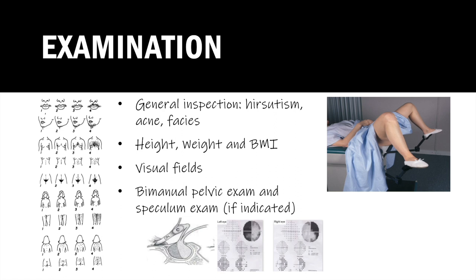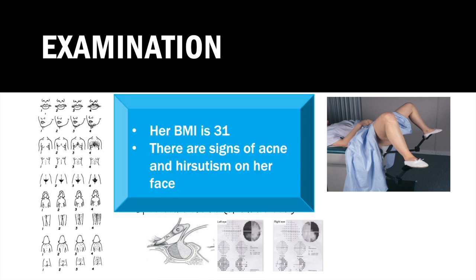The GP asks you to perform a relevant examination. You remember to inspect for hirsutism and acne as signs of hyperandrogenism, and to look for distinctive facial appearances such as exophthalmos in Graves' thyrotoxicosis or a cushingoid moon face. You ask Amy for her height and weight to calculate her BMI. The GP prompts you to examine her visual fields as a quick screen for pituitary adenoma causing optic chiasm compression and bitemporal hemianopia. On examination, Amy has acne and hirsutism, and her BMI is 31 — classifying her as obese.